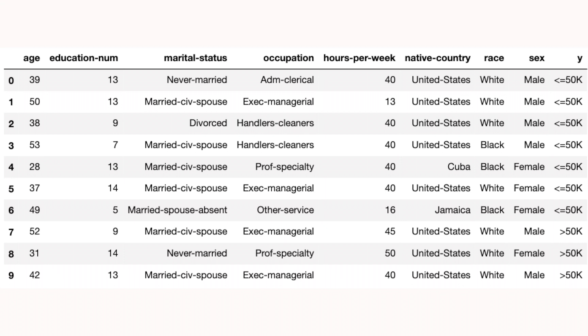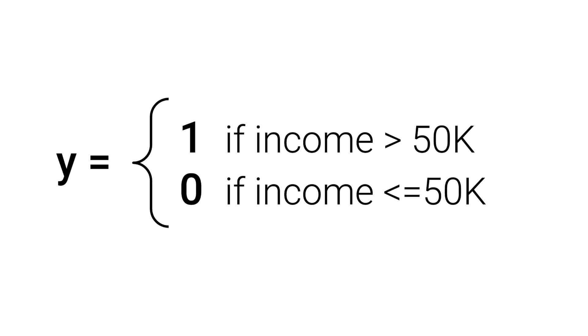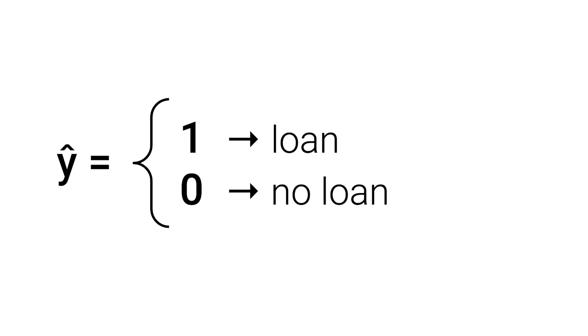We've built a model using the adult dataset. After a bit of feature engineering, we use the first six columns to train a model. These are features like a person's level of education and marital status. We want to use these to predict if a person's annual income is above or below $50,000. In algorithm fairness, it is convention to reframe the target variable so that the positive prediction will lead to some benefit. So we take above $50,000 as the positive prediction and below $50,000 as the negative prediction. If we predict that the person's income is above $50,000, they will receive a loan; otherwise, they will not.